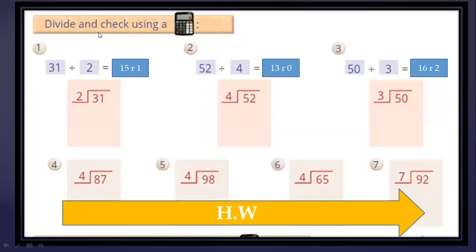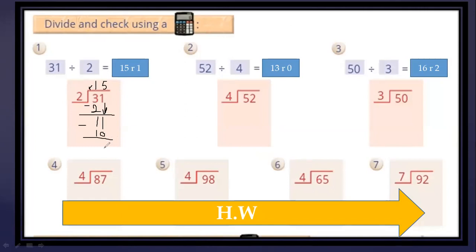Divide and check using a calculator. Now, 31 divided by 2: 3 divided by 2 equals 1; 1 multiplied by 2 equals 2; subtract: 3 minus 2 equals 1. Bring down the 1: 11 divided by 2 equals 5; 5 multiplied by 2 equals 10; subtract — the remainder equals 1.